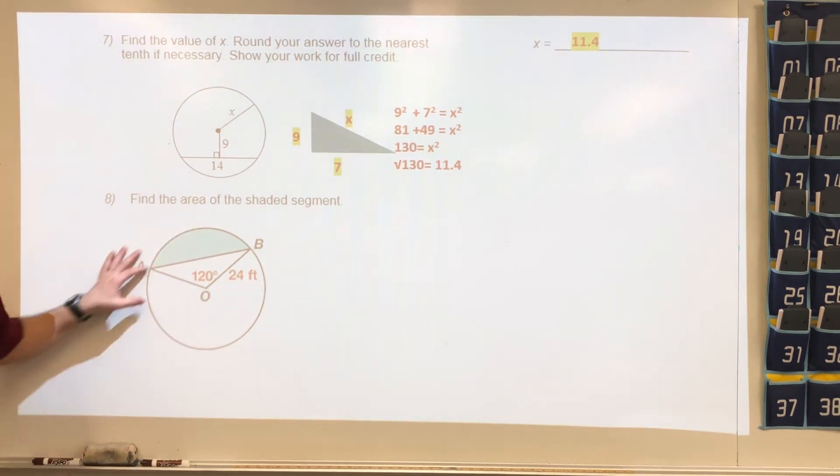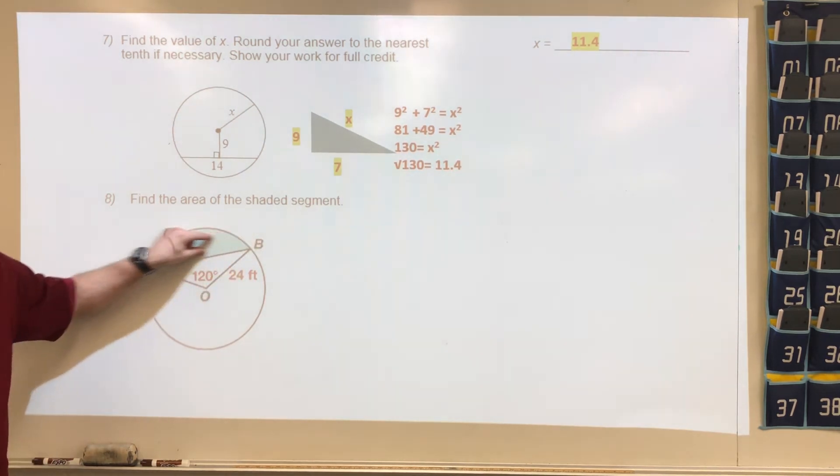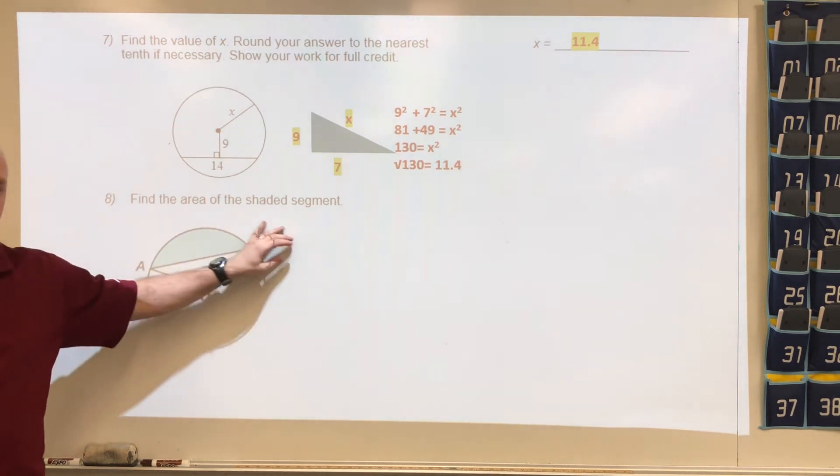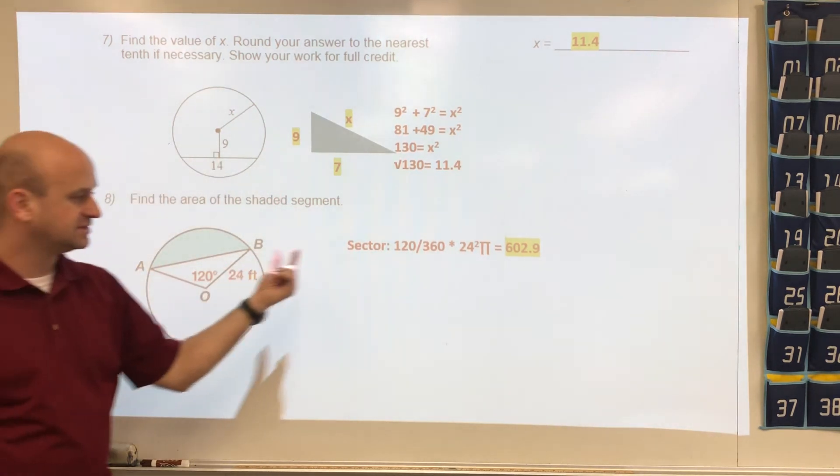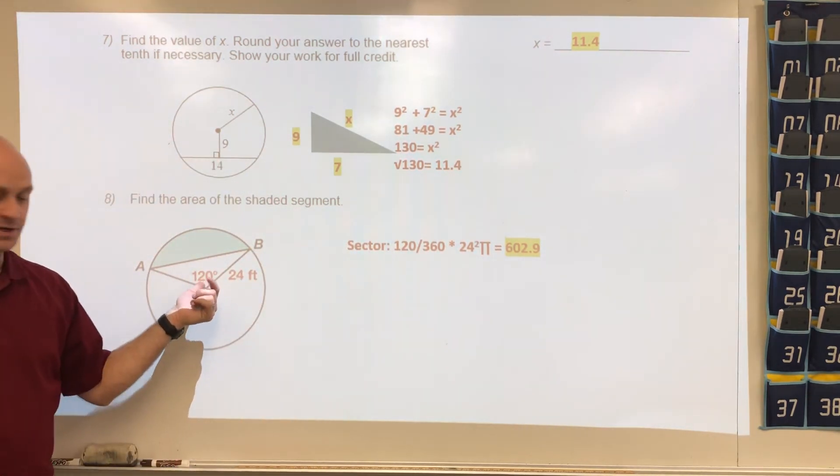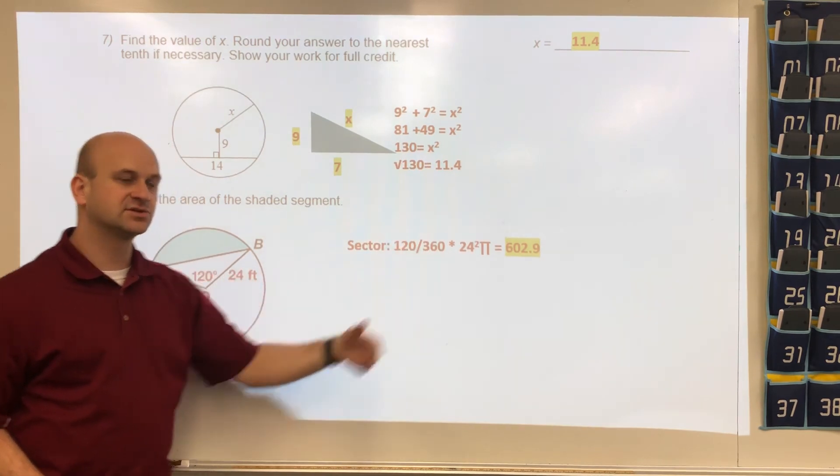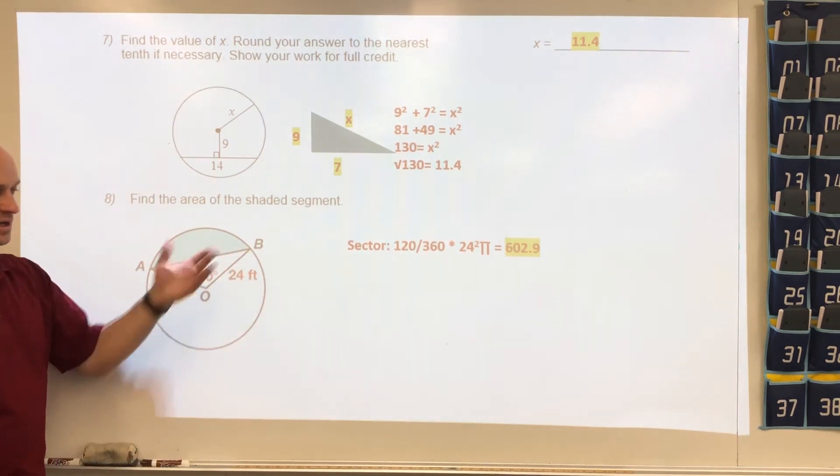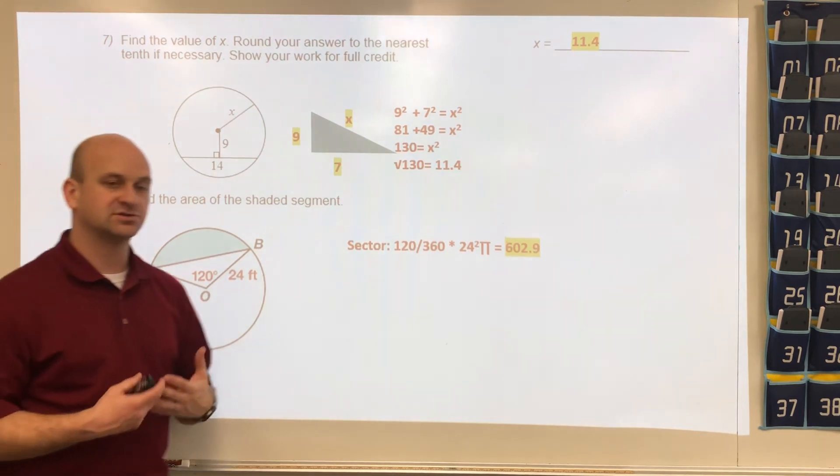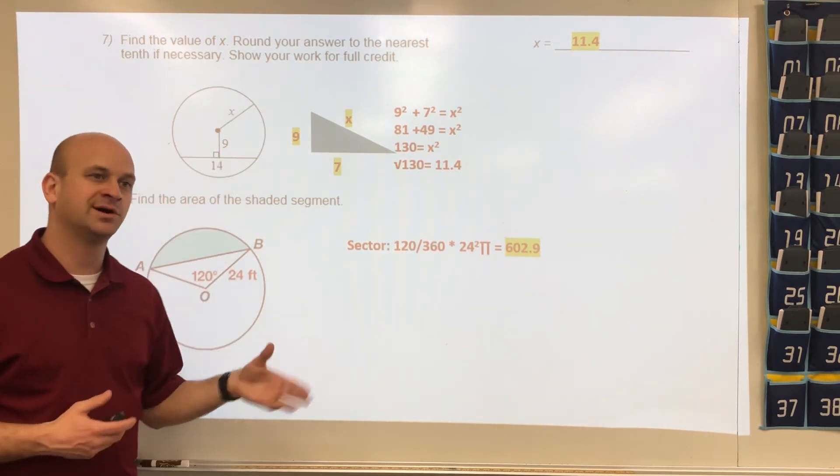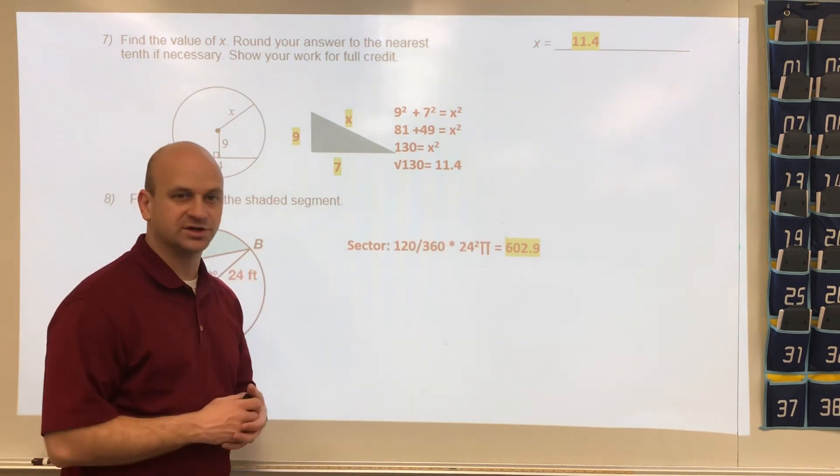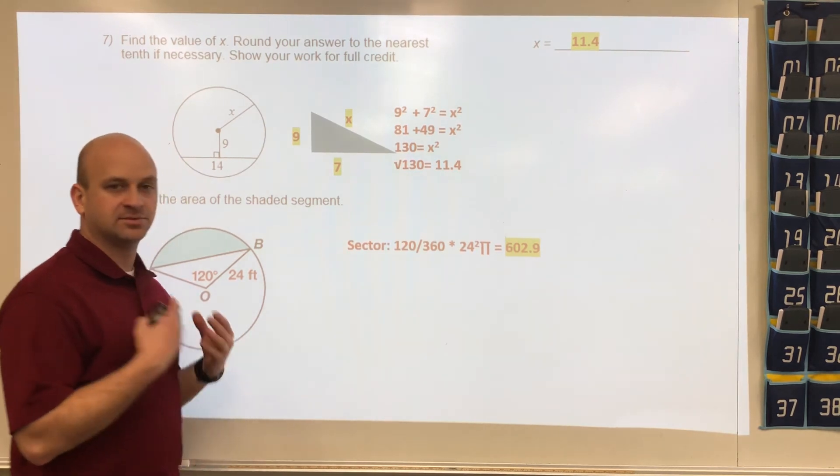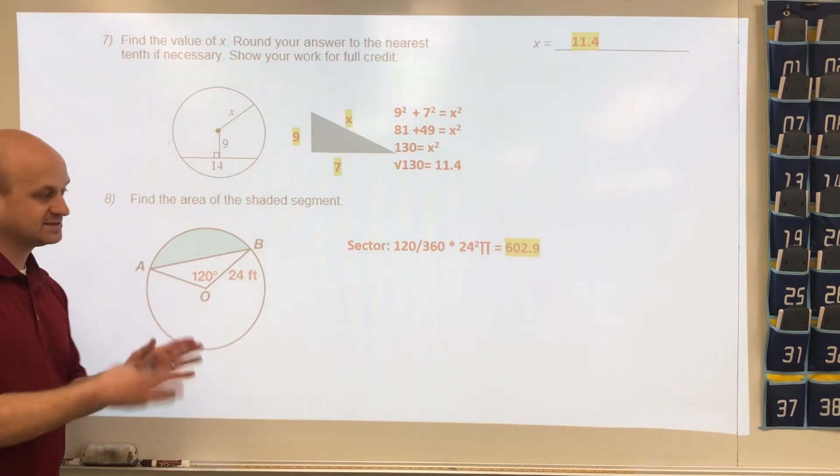Number eight, we have the area of a shaded segment. In this problem, this is like the crust that I would call the pizza. The first thing we have to do is find the area of the sector. We take the degrees we want, which is 120, divided by 360 times the area of the circle. We have 24² times pi, and we get a decimal value of 602.9. On these problems, the decimal value is what we want because we're going to get one part pi, one part not pi, and the answer is kind of weird. We want to make sure that our values in this problem are in decimal form.